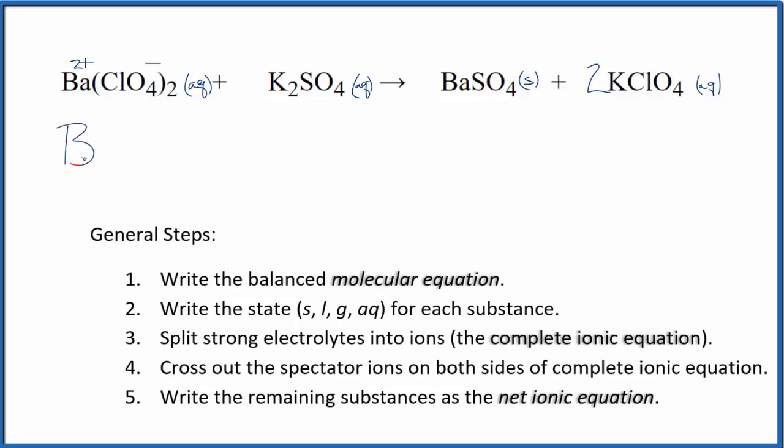So we write Ba 2 plus, that's our barium ion, and I won't write the states now. Let's write that at the end. Then we have 2 of these perchlorate ions, so 2 of the perchlorate ions. Potassium, that's in group 1, that'll be 1 plus each one of them, and the whole sulfate, 2 minus. So we have 2 potassium ions, and then we'll have just the sulfate ion, the 1 SO4 2 minus. So these are the reactants in our net ionic equation.